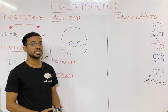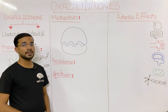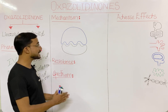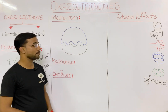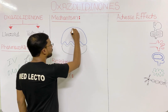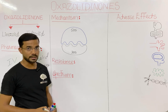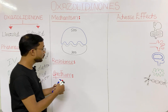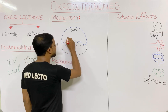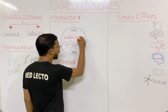If we look at the mechanism of how oxazolidinones work on bacteria, they act on the ribosome. The bacterial ribosome has two components: the 50S ribosomal subunit and the 30S ribosomal subunit. The ribosome is made up of two components: protein and ribosomal RNA.